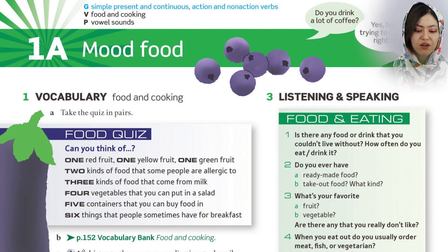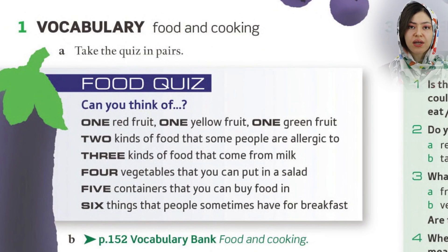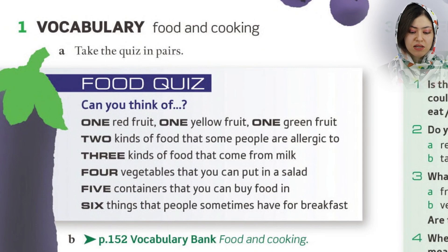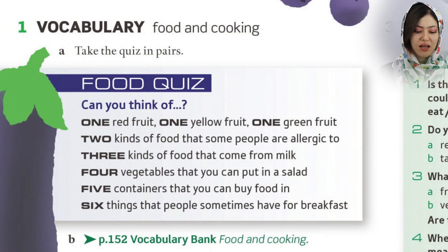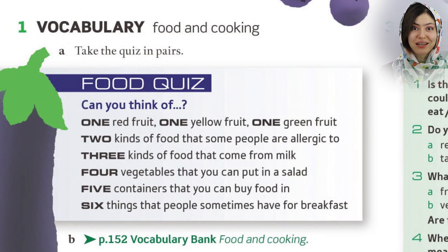But first of all, we are going to go for the vocabulary section. Take a look at part 1, vocabulary: food and cooking. There is a quiz here — a really sweet one. Let's do it together. It's a kind of warm-up to get through the better parts of this book. So, can you think of one red fruit? Strawberry, apple — there are a lot of them.